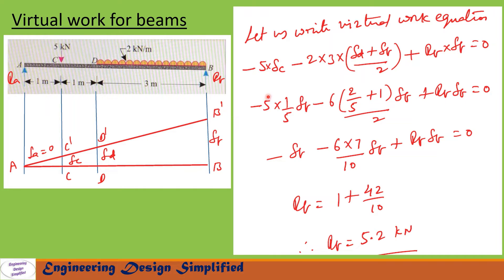Now let us write the virtual work equation. The equation is: minus 5 × delta C (since the 5 kN load acts vertically downwards and displacement is upwards), minus 2 kN/m × 3 meters (total distance from D to B) × (delta D + delta B) / 2 (average displacement between D and B), plus RB × delta B = 0. RB acts vertically upwards and delta B is also in the upward direction.